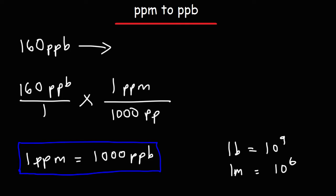So when converting from one unit to another unit, you want to set up the fractions in such a way that these units will cancel, and then you get the desired unit that you want, which is ppm. So it's 160 divided by 1,000. So this time we're moving the decimal point three units to the left. So it's going to be 0.16 ppm.